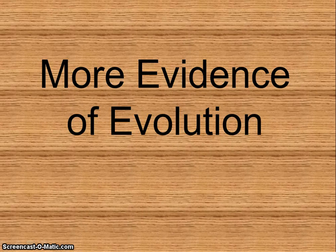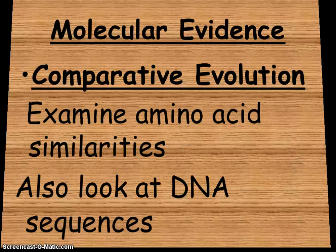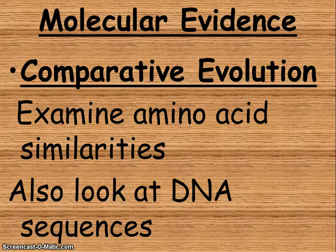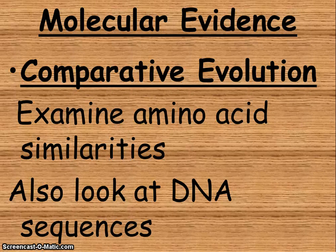We are going to continue our unit on evolution, and I'm going to be explaining a little bit more terms or evidence that will support the theory of evolution. The first thing we're going to talk about is molecular evidence, called comparative evolution. This is when we examine amino acid similarities within different species — we're pretty much looking at the DNA sequences.